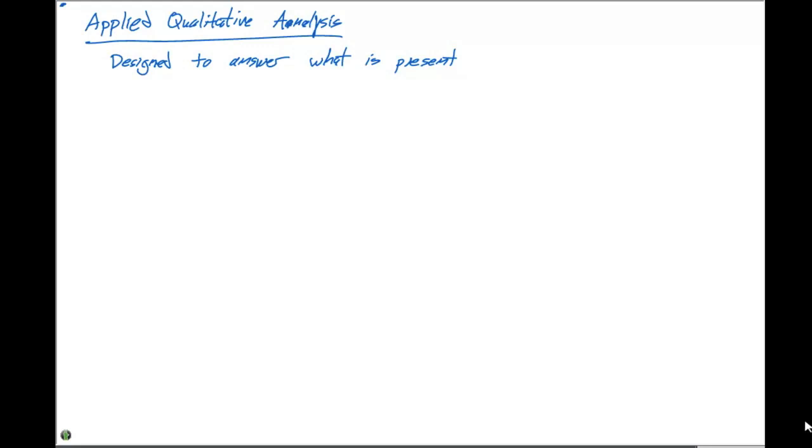When you look at qualitative analysis schemes, we put the ions, or cations, into groups. We group cations based on solubility characteristics. If you look in the textbook at the end of chapter 17, you'll see that we typically have roughly five groups.